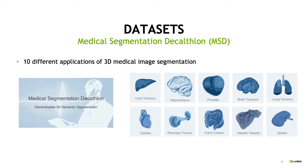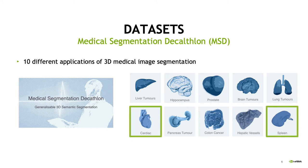The dataset we are using is the Medical Segmentation Decathlon, which contains 10 different applications of 3D medical image segmentation. For this study, we choose to use the cardiac MRI segmentation and the spleen CT segmentation, which covers two different modalities of medical images.